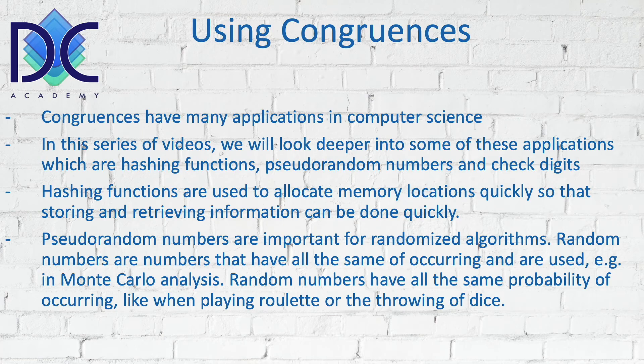Pseudo-random numbers are very important when we look at randomized algorithms. Random numbers are characterized by the fact that all of them have the same probability. For example, when you're playing roulette, all the numbers on the roulette wheel have the same probability of occurrence. The same happens with dice — dice are specially made so that none of the numbers have a higher probability of occurring.